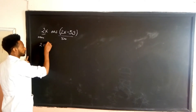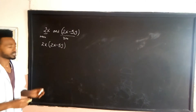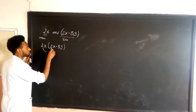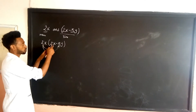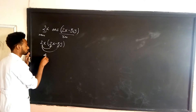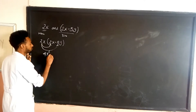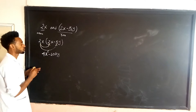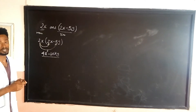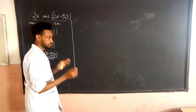We have 2x times (2x minus 5y). 2x times 2x gives us 4x² — because x times x is x squared. Then 2x times negative 5y gives us negative 10xy. So we get 4x² minus 10xy.